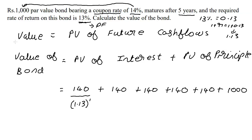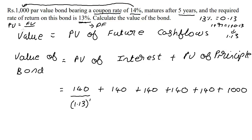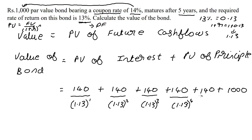We use the present value formula: PV = FV / (1 + r)^n. All the cash flows — the ₹140 each year and the ₹1000 — are future cash flows. The first year's interest is discounted to the power of 1, second year to the power of 2, third to the power of 3, fourth to the power of 4, and fifth year's interest and principal both to the power of 5.